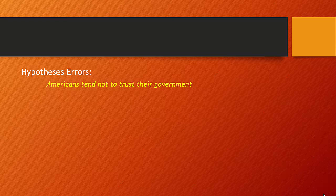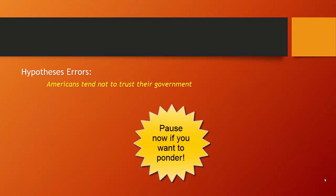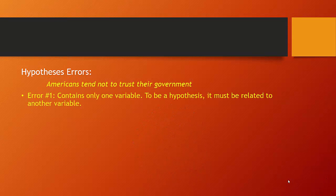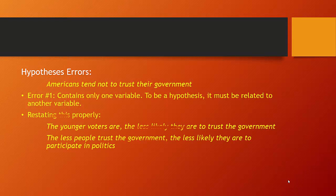The first example: 'Americans tend not to trust their government.' The error here is that it contains only one variable: trust. To be a hypothesis, we must relate our variable trust to something else. For example, the younger people are, the less likely they are to trust their government. Or, the less people trust government, the less likely they are to participate in politics.